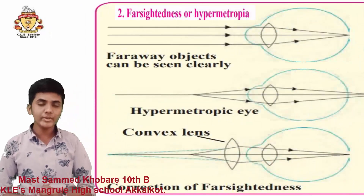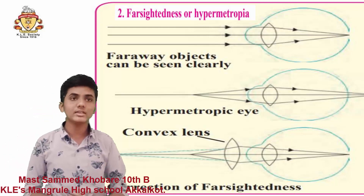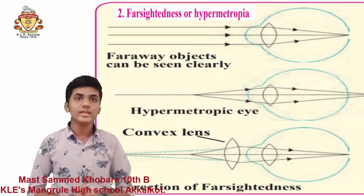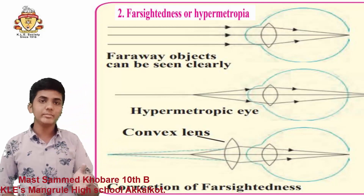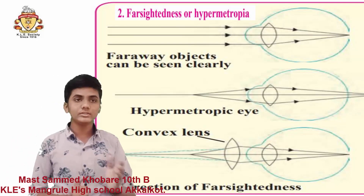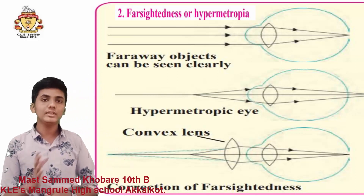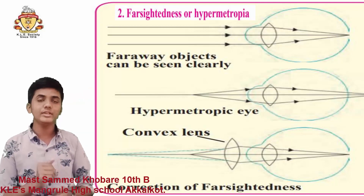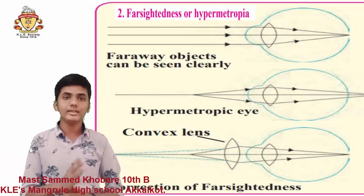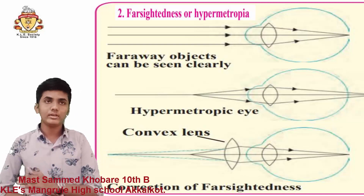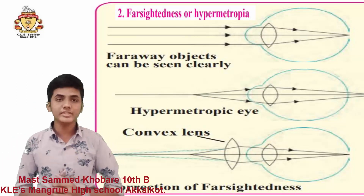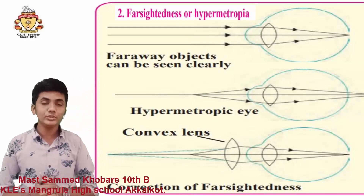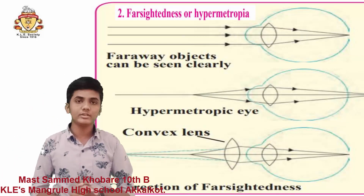The next defect is hypermetropia, known as farsightedness. In this case, the human eye can see distant objects clearly but cannot see nearby objects distinctly. The image of the object forms behind the retina. This defect also has two possible reasons. First, the curvature of the lens and cornea decreases so that the converging power becomes lesser. Second, due to flattening of the eyeball, the distance between the lens and retina decreases. This defect can be corrected using spectacles with a convex lens of proper focal length, since a convex lens has positive focal length and positive power is required.